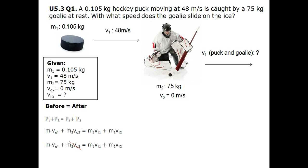We can cancel out mass 2 times initial velocity 2, since we know that the initial velocity of the goalie is 0 meters per second. Whatever number multiplied by 0 will always be 0. So we write a new equation: mass 1 times initial velocity 1 plus 0 equals mass 1 times final velocity 1 plus mass 2 times final velocity 2.